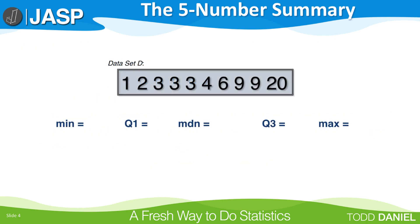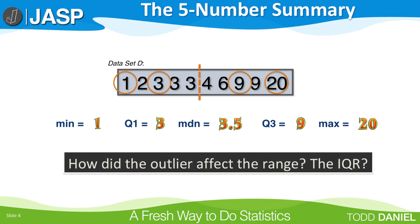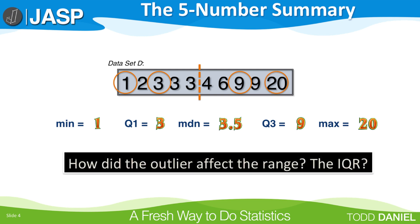Using data set D, and what we have just learned about the interquartile range, we can see that the minimum is 1, quartile one is 3, the median is 3.5, quartile three is 9, and the maximum is 20. We can see that the outlier affects the range, but not the interquartile range.